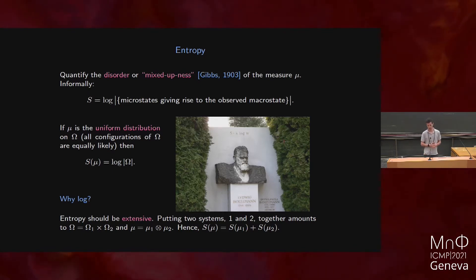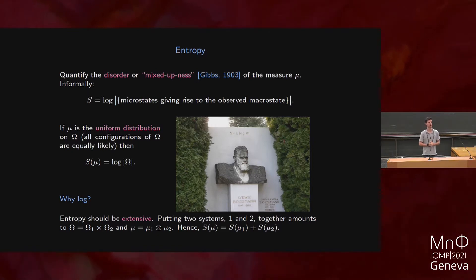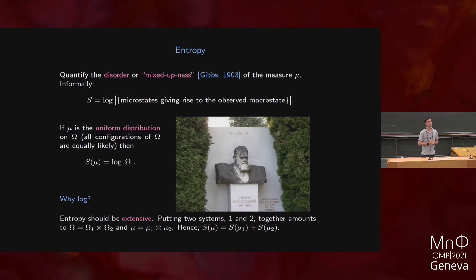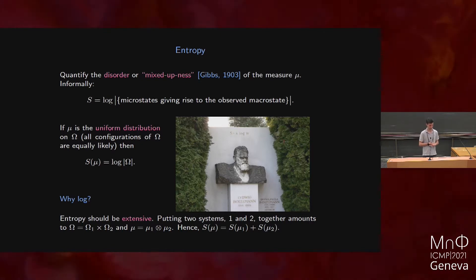Informally, you have a complex physical system which has lots of different details inside. All those details would constitute what we call the microstate, and you observe a small number of parameters whose values constitute the macrostate. The disorder of the system — the entropy — is proportional to the number of possible different microstates that give rise to the observed macrostate. That's the philosophical interpretation of entropy.